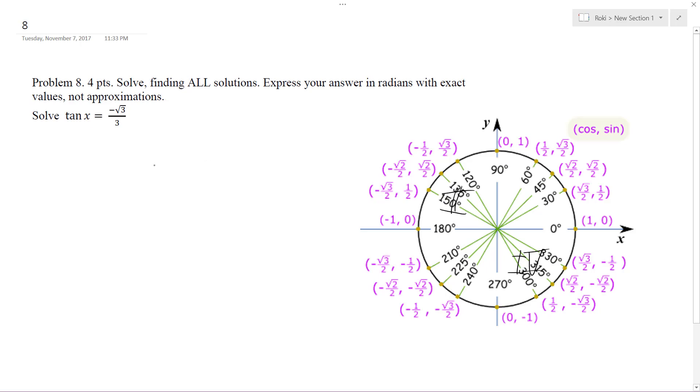Let me think here. Opposite over adjacent, so negative root three over three. That's quadrant three... or not, excuse me. Quadrant two, I should say.